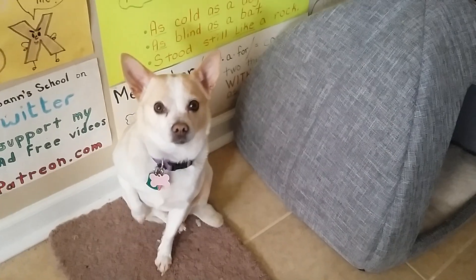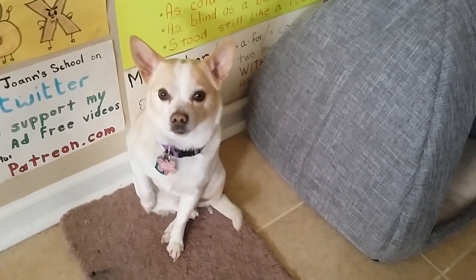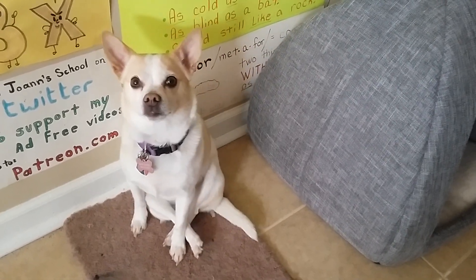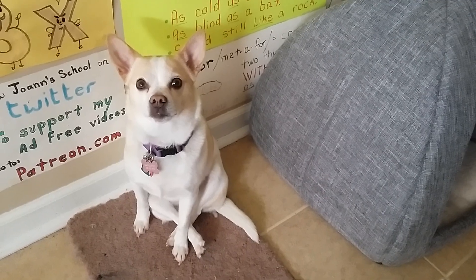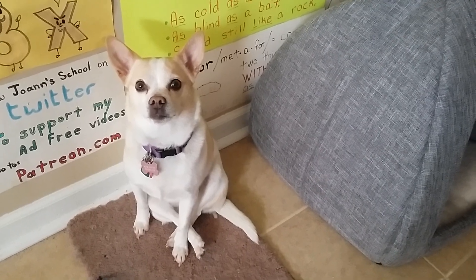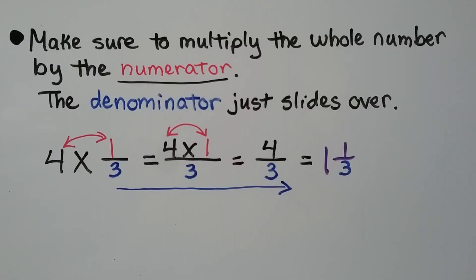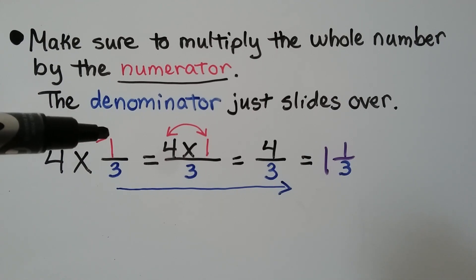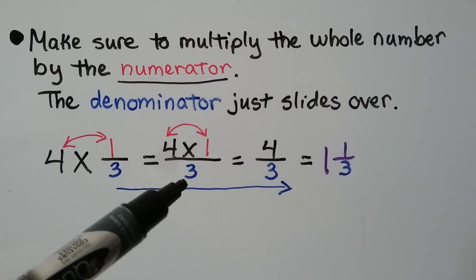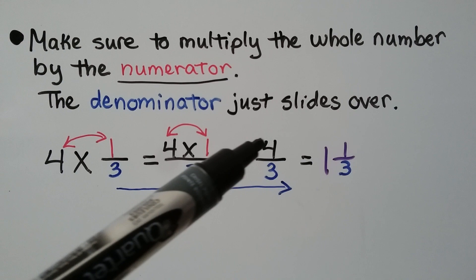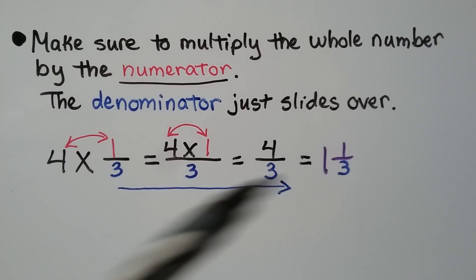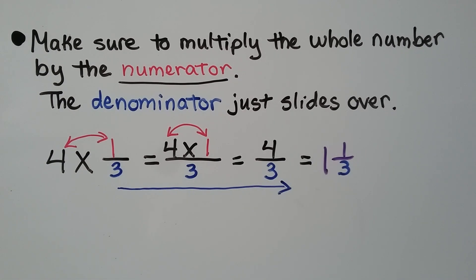Look who came to visit me just now — hi, Miss Bonnie Bickles! So make sure to multiply the whole number by the numerator; the denominator just slides over. 4 times 1 third — we multiply the 4 times 1 and it's written over the denominator. We get 4 thirds, which is equal to 1 and 1 third.